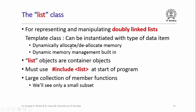Dynamic memory management is built inside the list class, so as a user you will not need to worry about how memory is being allocated or deallocated. Like vectors and maps, list objects are container objects — basically collections of objects of some other type. If you are to use the list class in your program, you must use #include <list> at the start of your program. Like the vector and map classes, the list class has a large collection of member functions. In this lecture we will study only a small subset of these, and I encourage you to study the others from the handout.